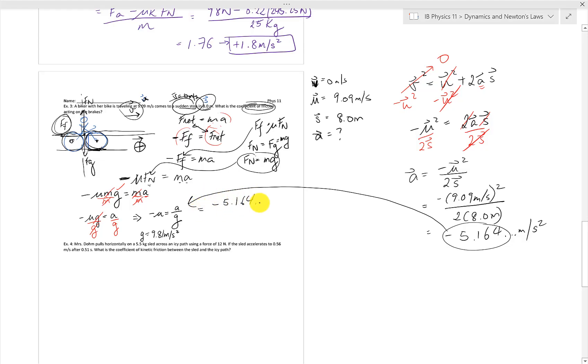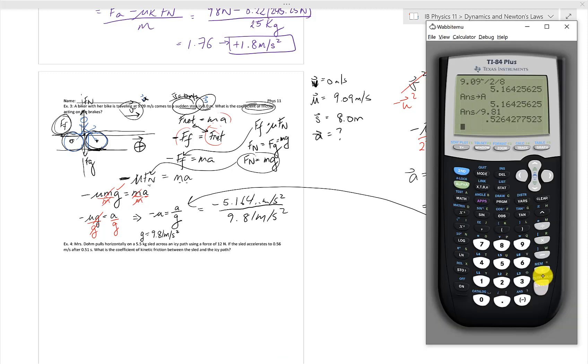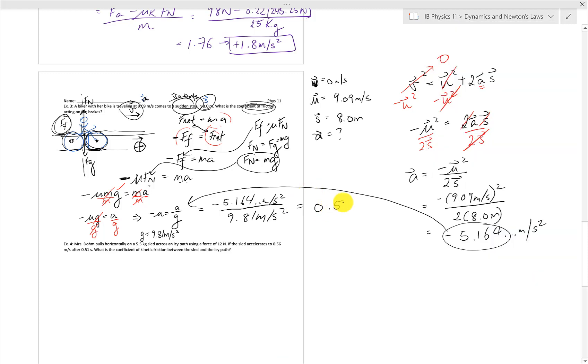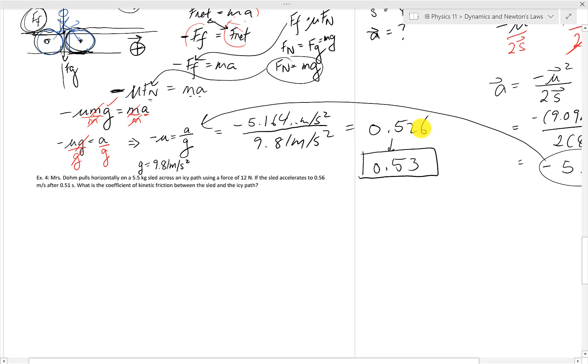So then we can plug everything in with the acceleration on the top. This is the deceleration of the biker, actually, with the acceleration due to gravity on the bottom. We get a coefficient of 0.526, which we are going to round to two sig figs. And just checking that everything just cancels out nicely, we have the units of acceleration meters per second squared cancelling out here. And here we have a negative sign. But notice we also have a negative sign that was built in our equation since the force of friction was in a backwards direction. These two negative signs cancel out as well, leaving us with a nice, clean number with no units, which is the characteristic of a coefficient of friction.